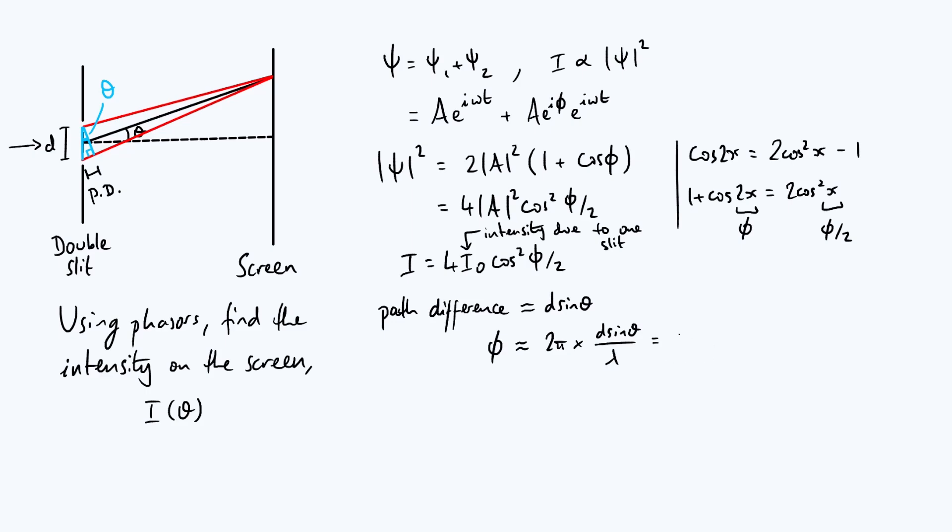And this is equal to, in more conventional parameters, kd sine theta. We usually introduce k, the wave number, which is just defined to be two pi over lambda.